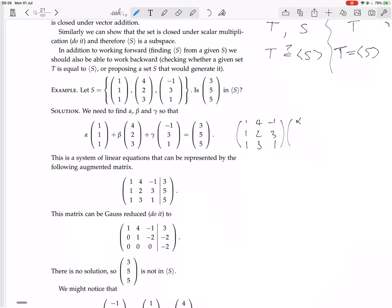So we'll put that like that. And we have alpha, beta, gamma equals (3, 5, 5). So this is the matrix equation you want to solve. So they do it. Let's do it ourselves.